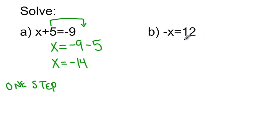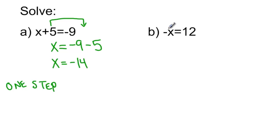Likewise, question b: if I have a statement like negative x equals 12 and I want to solve for x, I need to isolate the variable x. Even though there's no real number here on the left-hand side, we understand that that negative sign means negative 1.